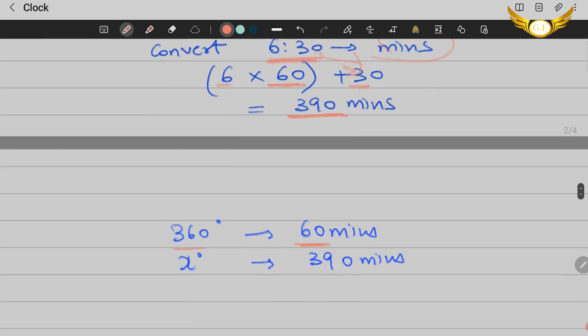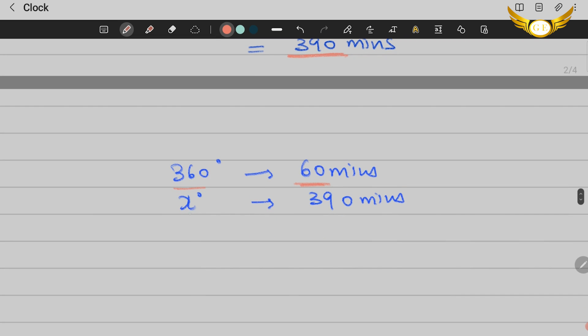How many degrees will it go in 390 minutes? There's a catch here. Since 60 into 6 hours is 360, and the needle goes 360 degrees in 60 minutes, we just need to find the degrees for 30 minutes.